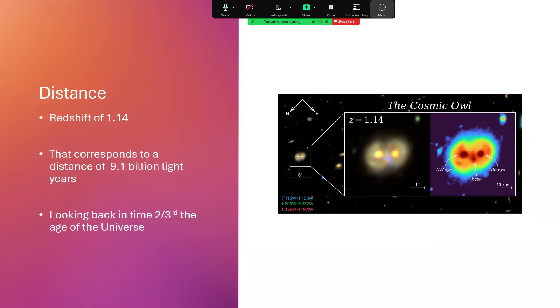The light that has been arriving into the cameras to make this image has been traveling two-thirds the age of the universe in order to get to us. This is an immense distance and it's incredible that we are able to make images of these things.